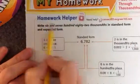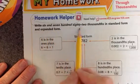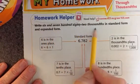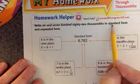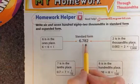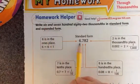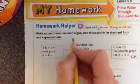Let's look at the homework helper and here's an example. If I have six and seven hundred eighty-two thousandths in word form and I'm going to write it in standard form and expanded form, I'm going to do standard form first because as I read it I can see where the numbers go.